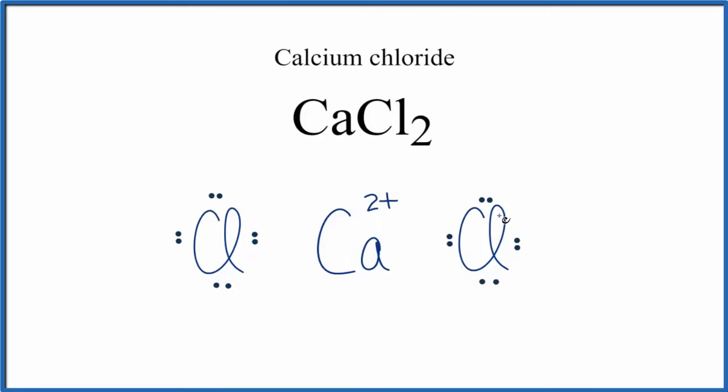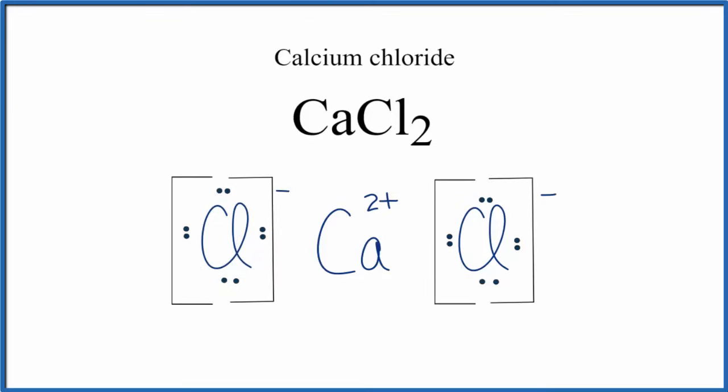The chlorines have each gained one electron and become one negative. We put brackets around the chlorines, and that makes this the Lewis structure for CaCl2.